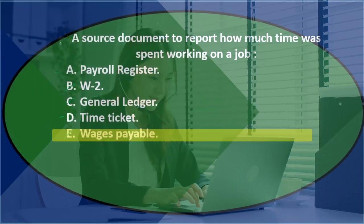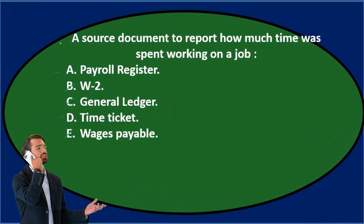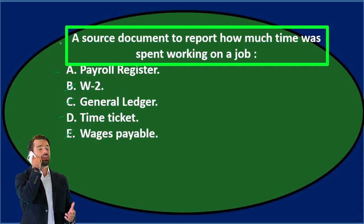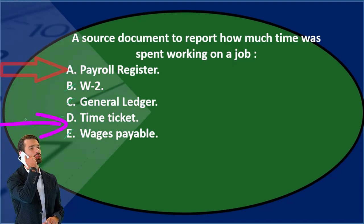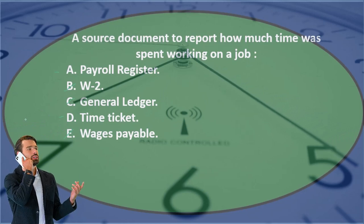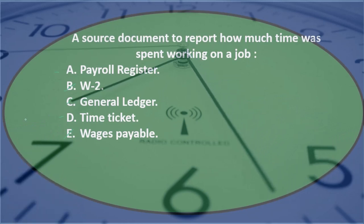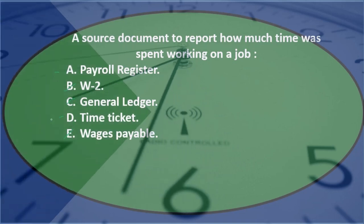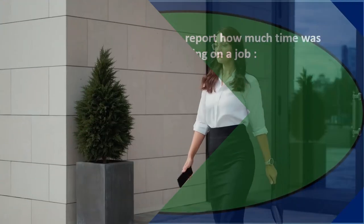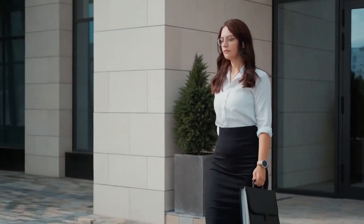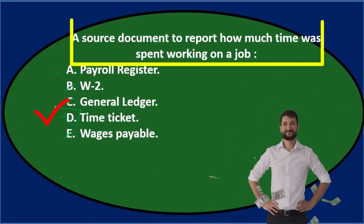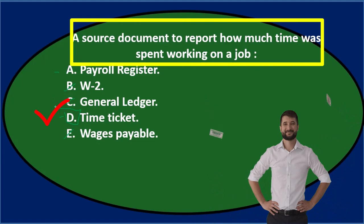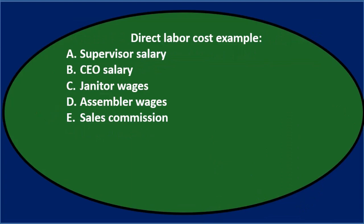We're left with A and D. A source document to report how much time was spent working on a job is either the payroll register or a time ticket. The payroll register tracks time for all employees — it's not really the source document, it's derived from the source document, which is the time ticket. The time ticket tells us which job people worked on, so we know to apply that time and labor cost to the specific job. Final answer: D) time ticket.